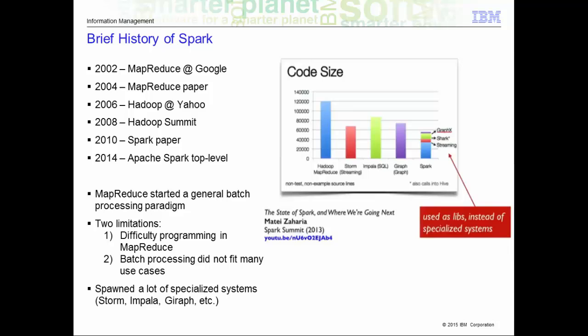Taking a look at the code size of some applications on the graph on this slide, you can see that Spark requires a considerably smaller amount. Even with Spark's libraries, it only adds a small amount of code due to how tightly integrated everything is with little overhead. There is great value in being able to express a variety of use cases with a few lines of code.